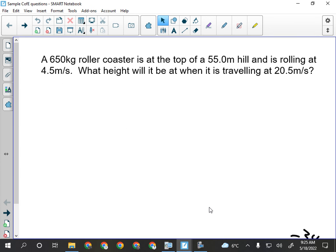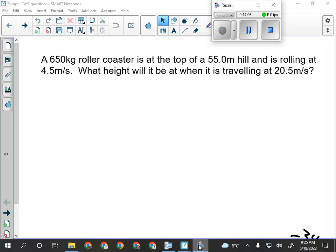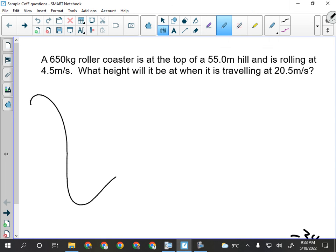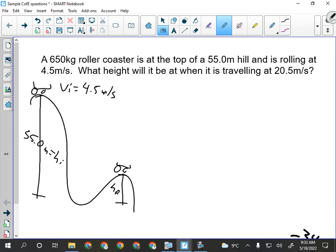This was an exam question years ago. Give it a try. You have a 650-kilogram roller coaster at the, is at the top of a 55-meter hill rolling at 4.5 meters per second. What will its height be when it's traveling at 20.5 meters per second? So, law of conservation of energy. So on this one here, we've got a roller coaster. We know that initially, it's here, on top of a 55.0-meter high hill, so that would be our initial height. And it's moving at an initial speed of 4.5 meters per second. We're looking for what's the height when it's traveling at 20.5 meters per second.